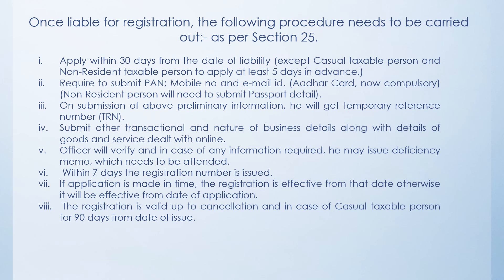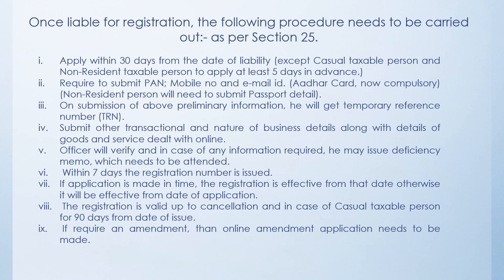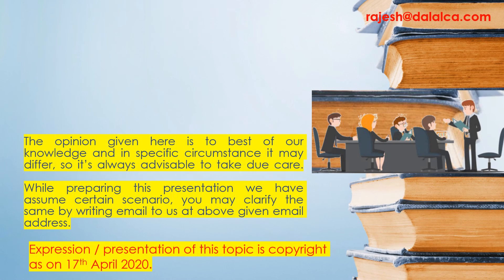Once the registration is done, it is valid up to cancellation. However, in the case of a casual taxable person, the registration is valid only up to 90 days from the date of issue, which can be further extended for another 90 days. If you require any amendment in the certificate, one has to file an amendment application online for any change in the details of the registration certificate.